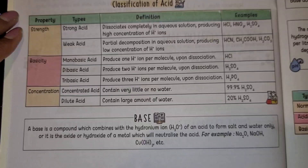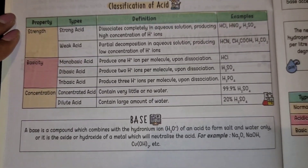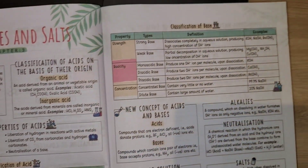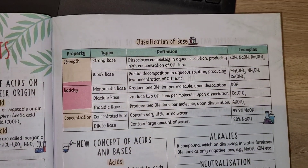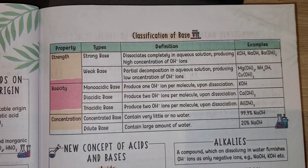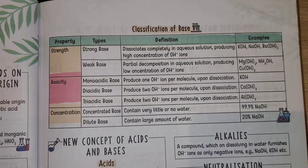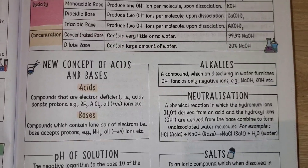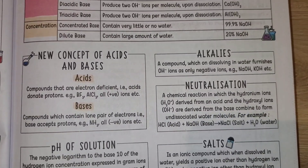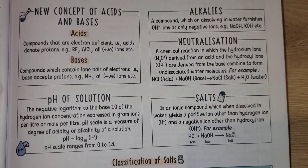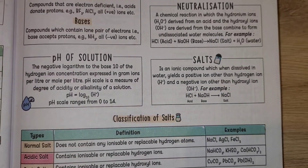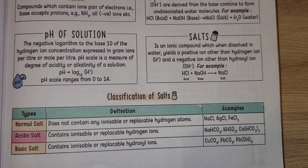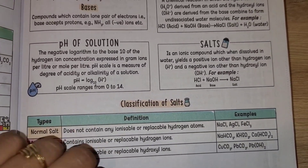For example, acids are classified based on strength, basicity, and concentration. Then the definition of base, classification of base by strength — strong base, weak base — basicity — monoacidic base, diacidic base, triacidic base — and concentration — concentrated base and dilute base. Then new concepts of acid and base, pH of solution, salt neutralization, and classification of salts: normal, acidic.